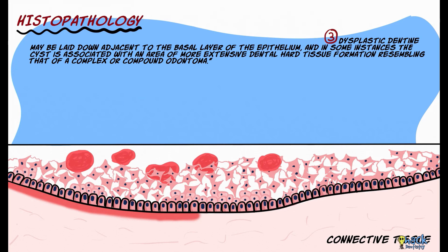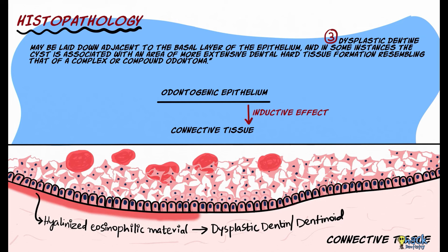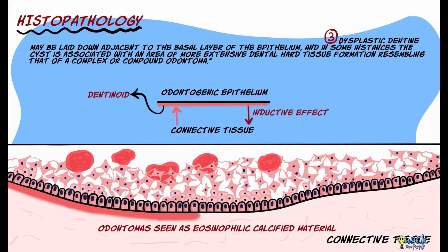There may sometimes be deposits of hyalinized eosinophilic material below the epithelium, called dysplastic dentine or dentinoid. This material is thought to arise as a result of an inductive effect of the odontogenic epithelium on the connective tissue — analogous to ameloblasts inducing dental papilla cells to become odontoblasts, which then secrete dentine. In some instances, Calcifying Odontogenic Cysts may be associated with odontomas, which can be seen histologically as sheets of eosinophilic or calcified material.